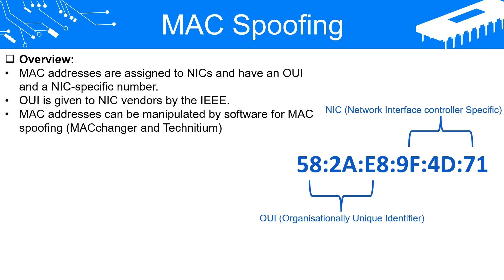As a result of this modification, the Ethernet driver generates frames using the falsified MAC address instead of the original one assigned by the manufacturer. This makes it relatively easy to forge a MAC address. MAC spoofing is employed to mimic another system, frequently an authorized or valid network device, to circumvent port security or MAC filtering restrictions.